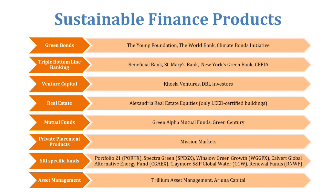Options include green bonds, triple bottom line banking, venture capital, sustainable real estate, mutual funds, private placement products, SRI-specific funds, and asset management. Take a look at these — you'll find they're doing quite well and could do well for your organization.